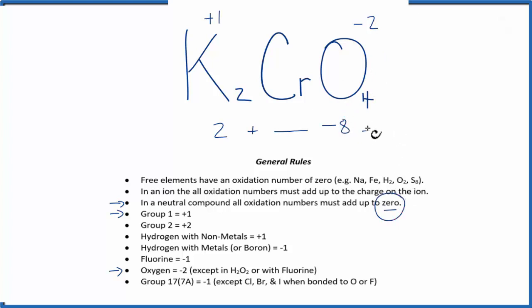So 2 plus 6, that's 8, then we have our minus 8, that would equal 0. So the oxidation number on the chromium here is positive 6.